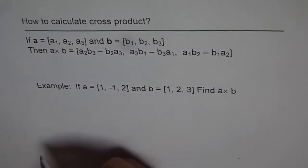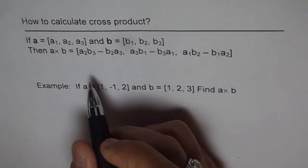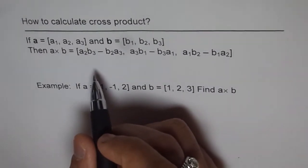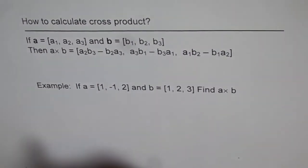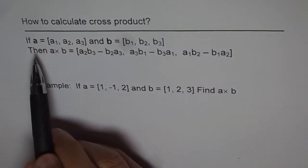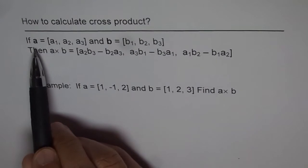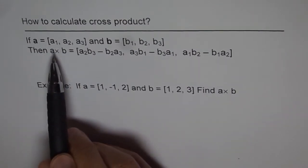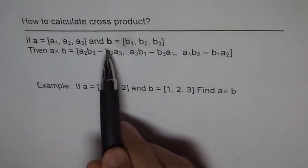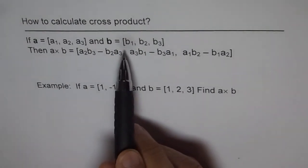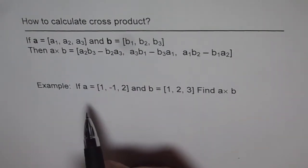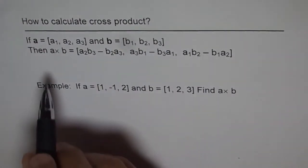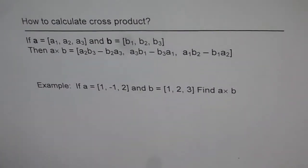This first approach I'll call the universal method of finding cross product. We have two vectors: vector a, represented by its direction numbers a1, a2, a3, and vector b with direction numbers b1, b2, b3, and we need to find what is a cross b.